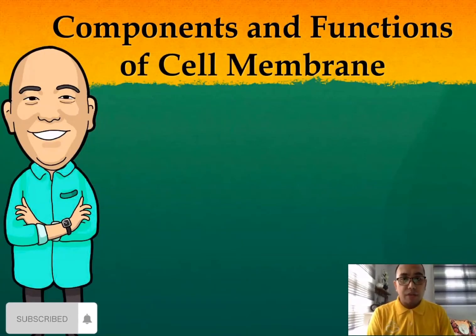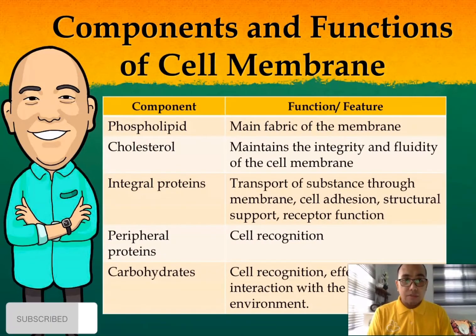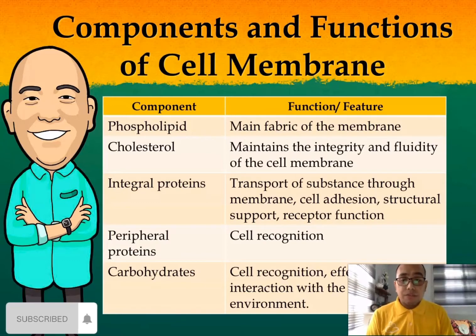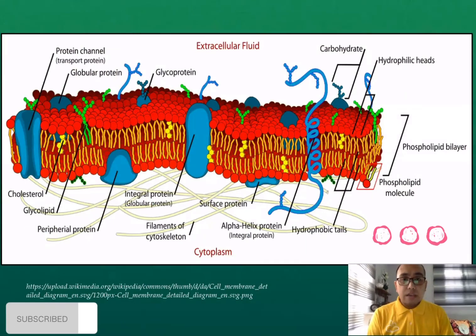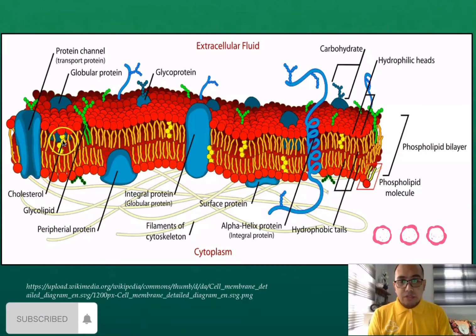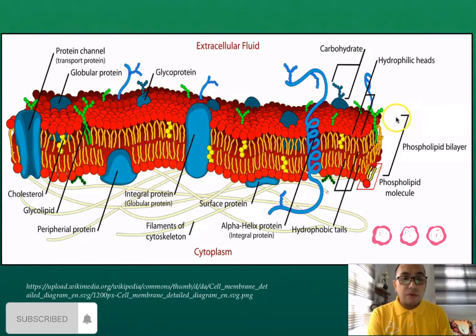These are the components and functions of the cell membrane. We have the phospholipid as the main fabric of the plasma membrane. Cholesterol maintains the integrity and fluidity of the cell membrane. Integral proteins handle transport of substances through the membrane, cell adhesion, structural support, and receptor function. Peripheral proteins are for cell recognition. Carbohydrates also function in cell recognition and interaction with the extracellular environment. Here is a creative visualization showing the cholesterol, glycolipids, carbohydrate chains attached to proteins, integral proteins, peripheral proteins, and the phospholipid bilayer.